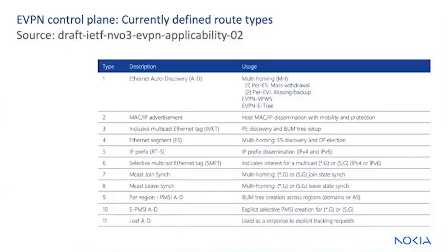But first, let's do a quick review of the route types in EVPN. For the sake of this conversation, the 11 route types can be broken down into four groups.